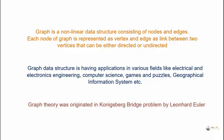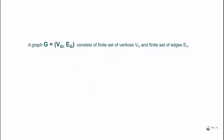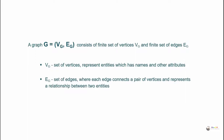Graph theory was originated in the Königsberg bridge problem by Leonhard Euler. A graph G = (V, E) consists of a finite set of vertices V and a finite set of edges E. V is the set of vertices representing entities with names and attributes, and E is the set of edges where each edge connects a pair of vertices and represents a relationship between two entities.